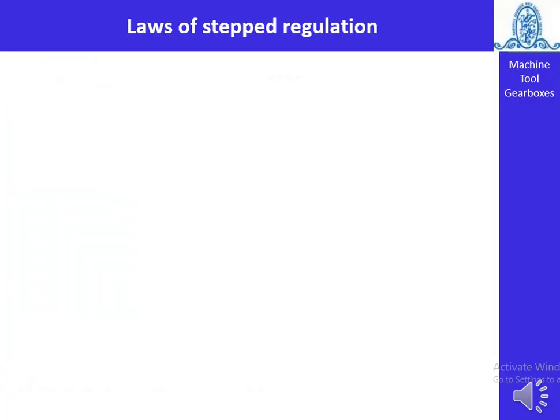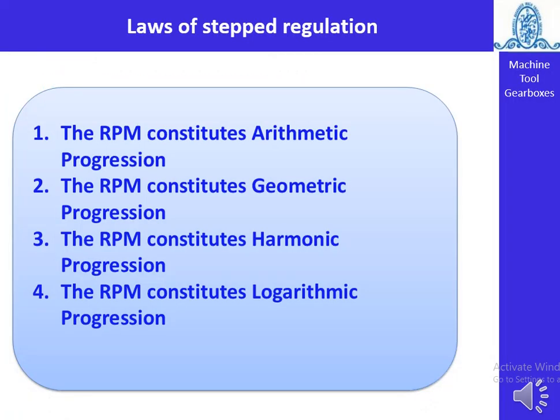So welcome students. There are four laws of step regulation in machine tool gearbox design. The first law is arithmetic progression, the second is geometric progression, the third is harmonic progression, and the fourth is logarithmic progression. We will see each one and determine which is feasible while designing a machine tool gearbox.